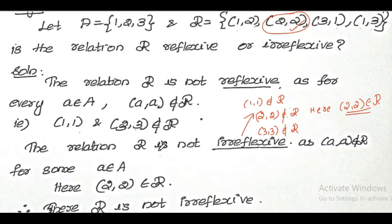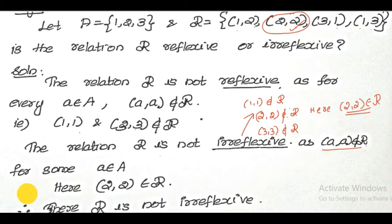So the relation R is not irreflexive. The reason is: for irreflexive, the condition is that (a, a) must not belong to R for any a. But here, (2,2) belongs to R. Therefore it is not irreflexive.